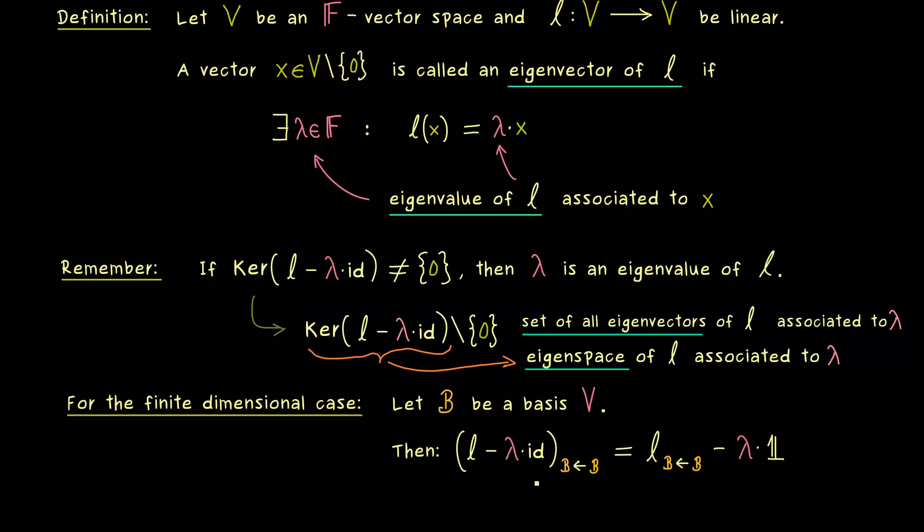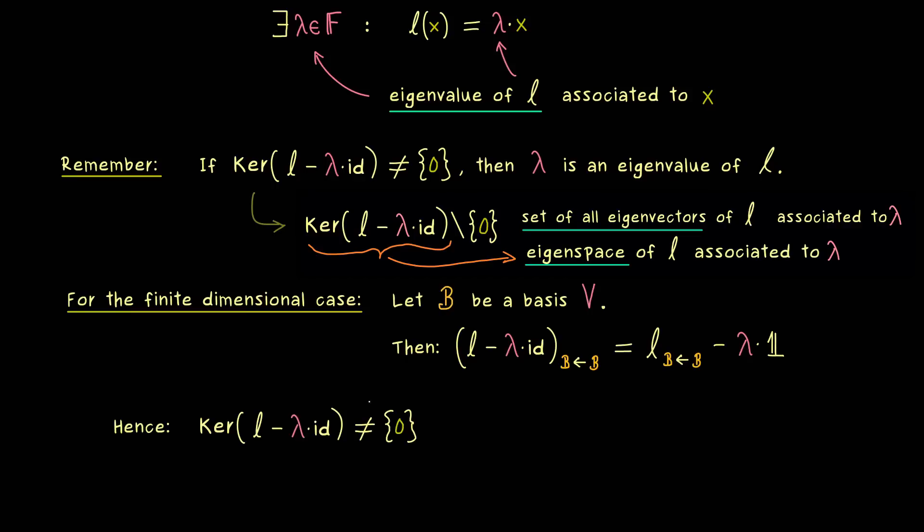And there we can use the fact that the dimension of the kernel does not change if we go to the corresponding matrix representation. In other words we get the following equivalence. The one kernel is non-trivial if and only if the other one is as well.